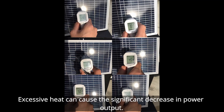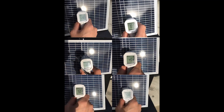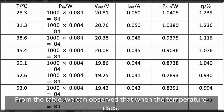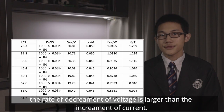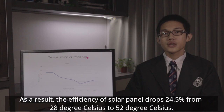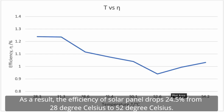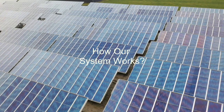Excessive heat can cause a significant decrease in power output. From the table, we can observe that when the temperature rises, the rate of decrement of voltage is larger than the increment of current. As a result, the efficiency of the solar panel dropped 24.5% from 28 degrees Celsius to 52 degrees Celsius.